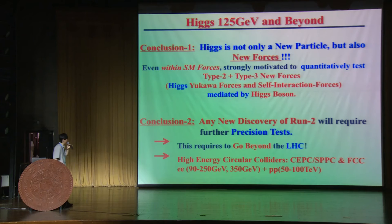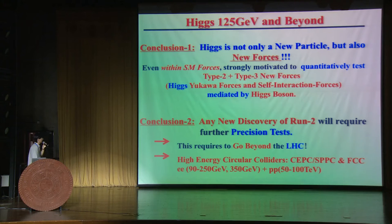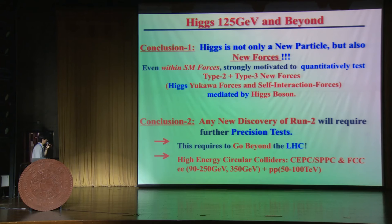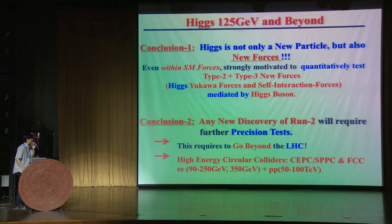As already heard from previous talks by Nima and Yifan Wang, currently under central discussion is the proposed Circular Collider, including one design in Beijing and another at CERN called FCC. There are two phases: the electron-positron phase in the energy range from the Z-pole up to 250 GeV for ZH production and the top-quark pair threshold. The second phase is the proton-proton collision with center-of-mass energy from 50 to 100 TeV.